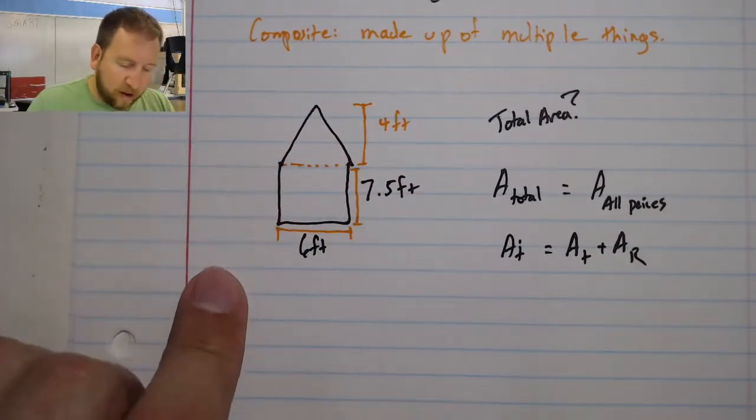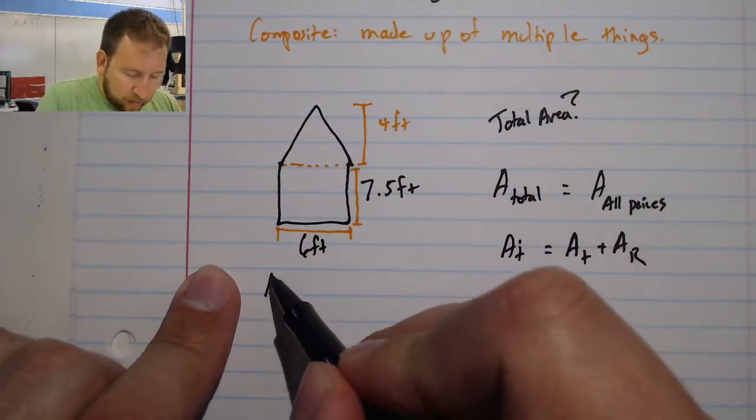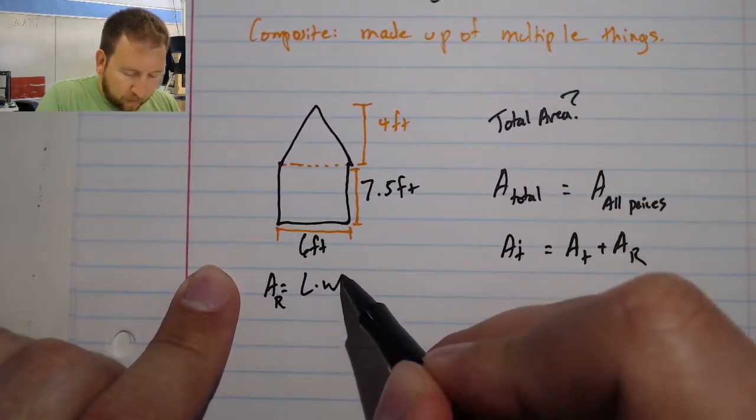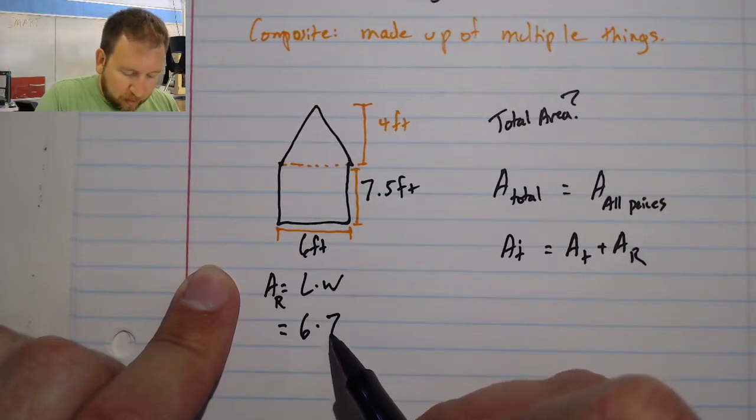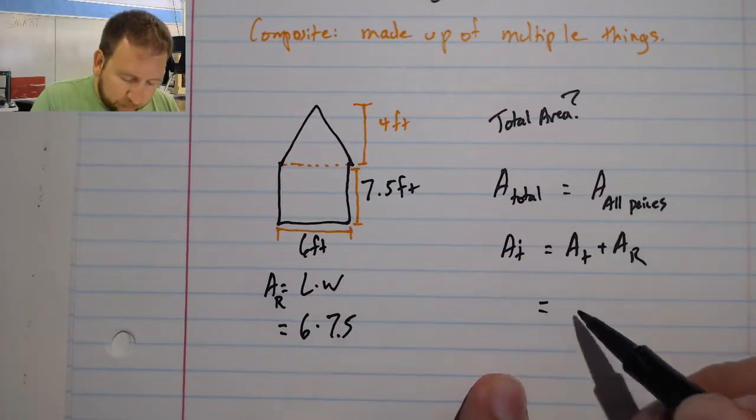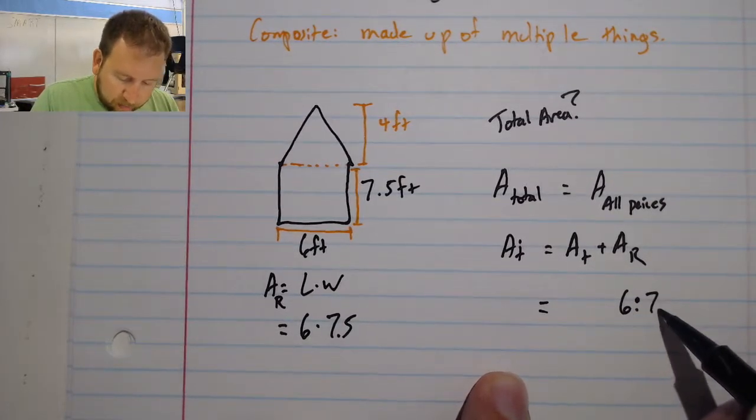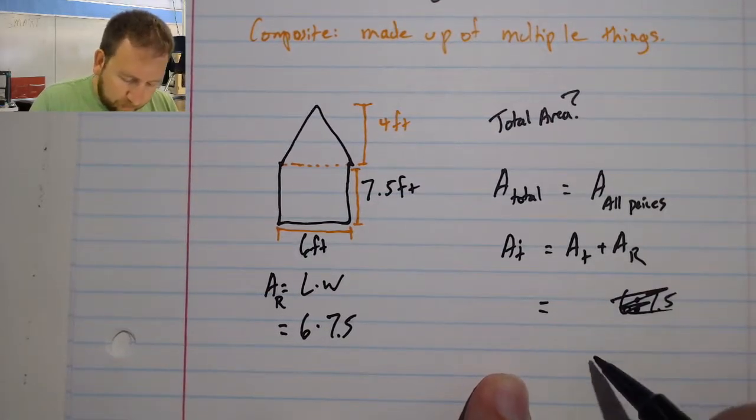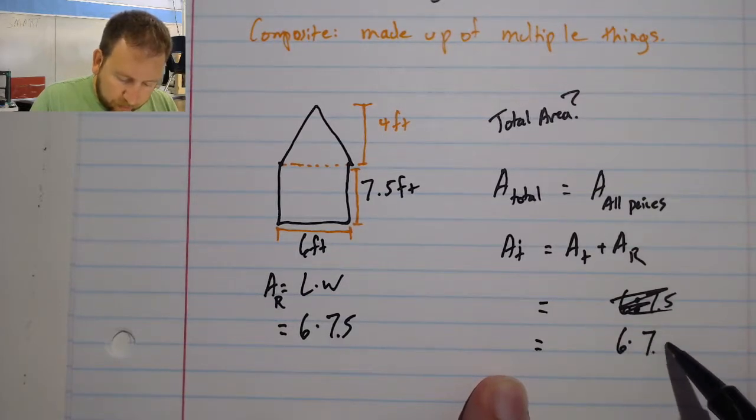So my first thing is I have my area of my rectangle. Area of a rectangle is length times width. And that's easy in this case. It's 6 times 7.5. So I can put that in for my area of a rectangle. 6 times 7.5.